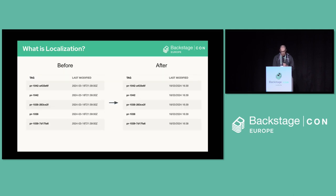Here's a quick example of what that looks like before localization — that would be on the left side. For example, the date — you can see it would just be a universal time, which is very developer-friendly, not necessarily user-friendly. People will not really know how to read that. And if you use localization, you will see on the right side the day, the month, the year, and the proper time format.